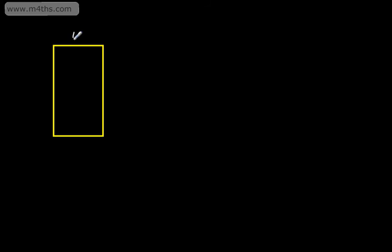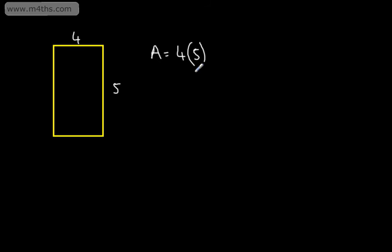I'm going to start off by drawing a rectangle. If I draw a rectangle and put some side lengths on here, and said that this one was going to be 4 and this one was going to be 5, we could look at finding the area of the rectangle. We know that the area is the length multiplied by the width. So what we'd say is 4 lots of 5. Instead of a multiplication sign, I'm just using brackets — exactly the same. 4 brackets 5 is 4 multiplied by 5.